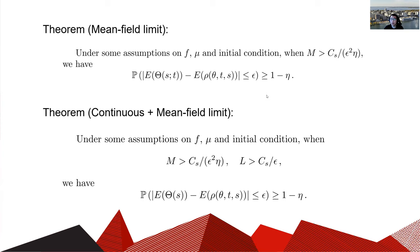Similar to the continuous limit case, we can also rigorously justify the convergence of the mean field limit by showing the cost function is close with high probability. Combining this theorem with the continuous limit result, we can justify that rho(s) is the right limit of theta(s) when l and m are large enough. It is therefore reasonable to consider the equation for rho and E(rho) to study the convergence of E(theta(s)).